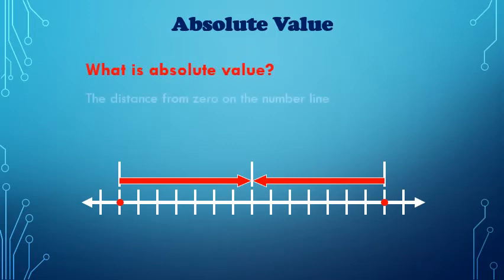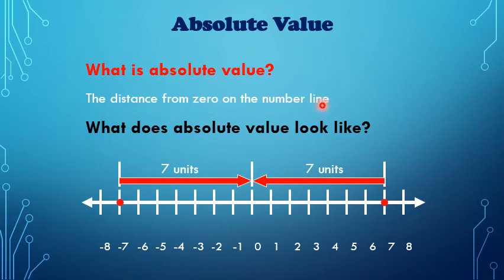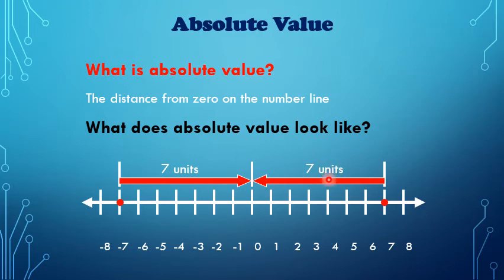Absolute value. The absolute value is the distance from zero on the number line. For example, positive 7 is 7 units from zero, and negative 7 is also 7 units from zero. The distance is the same for both integers. This means the absolute value represents the distance from zero on the number line.